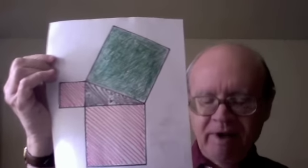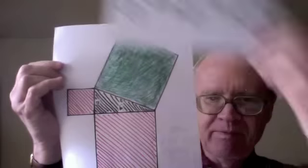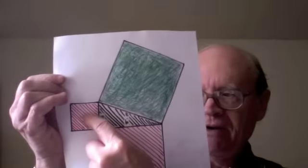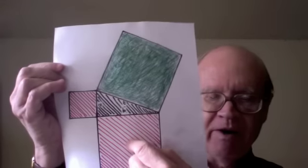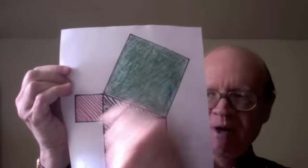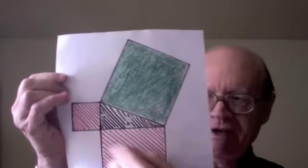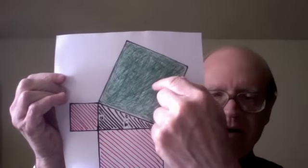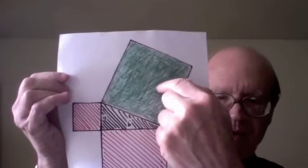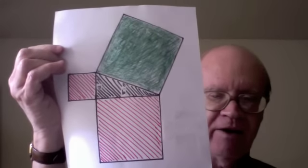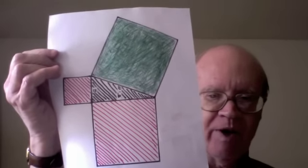And so the equation says a squared, that's this area, plus b squared, that's this area, equals c squared, that's this area. Meaning that the combined areas of these two red squares come out exactly the same as the area of this single green square. That is the geometric meaning of the Pythagorean equation.